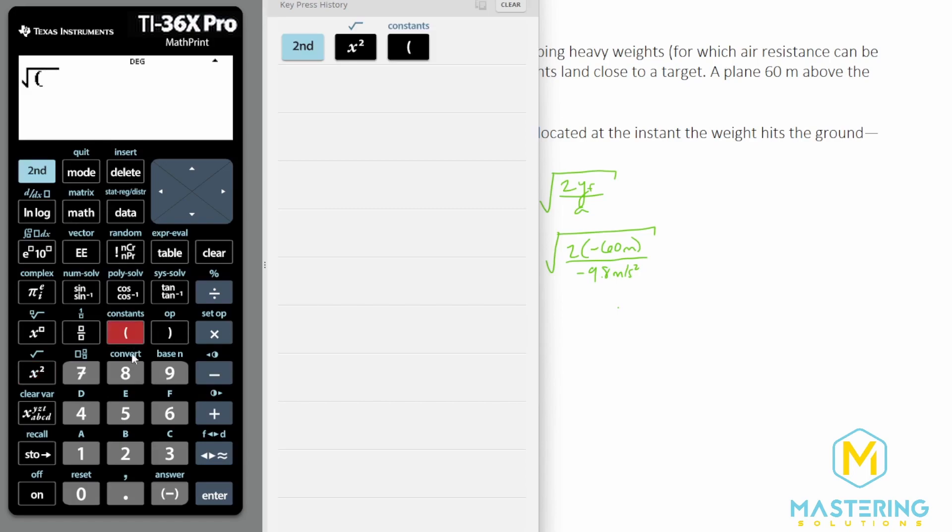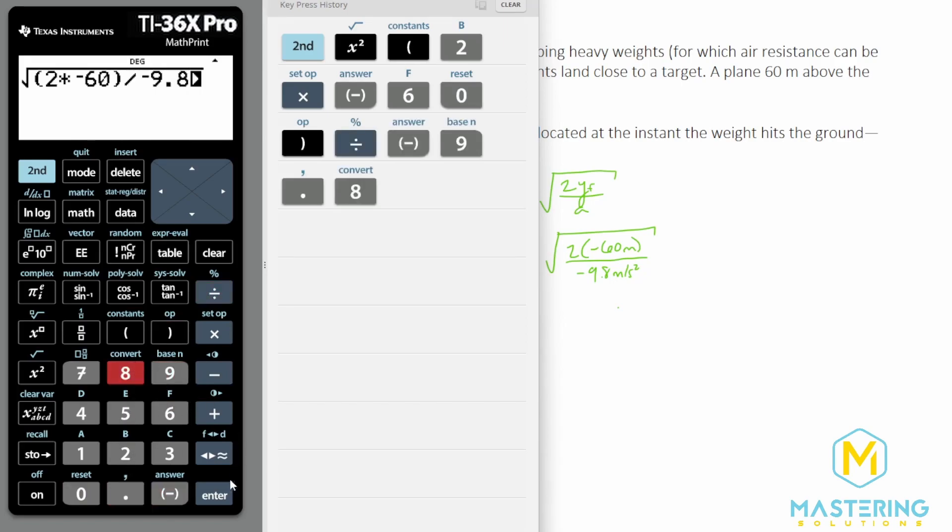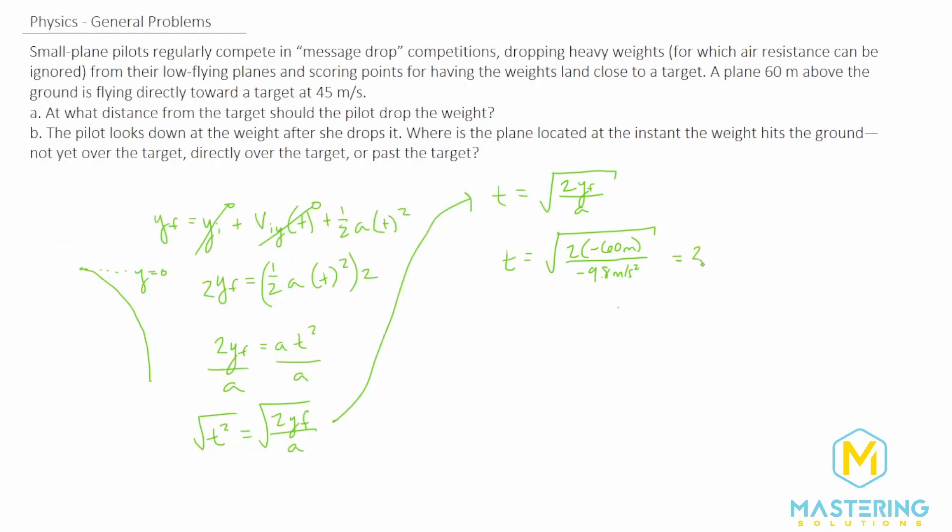So we have the square root of two times the delta y or y final is negative 60 and that will be divided by a negative 9.8 meters per second squared which gives us a time of 3.499 seconds.